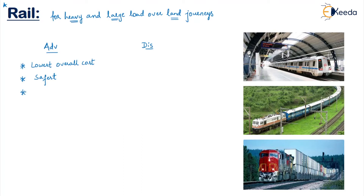The next advantage of rail transport is that it can be effectively linked to your multimodal system. In the multimodal system, as mentioned, you have more than one mode of transport, and whenever we are using multimodal transport, railways can be effectively linked with it. These are the major advantages of railway transport.